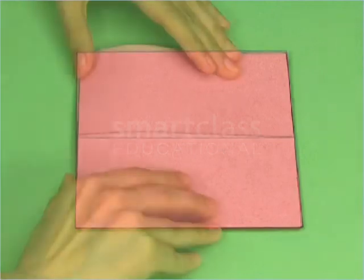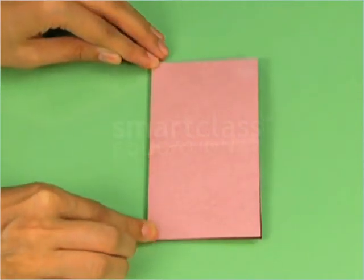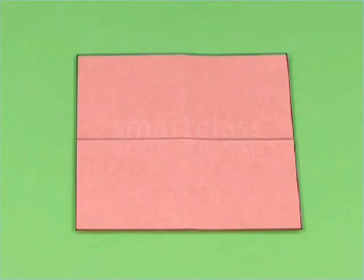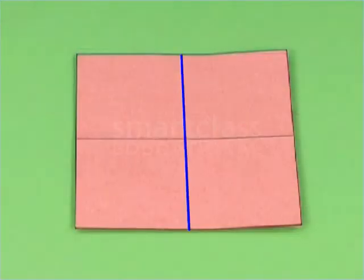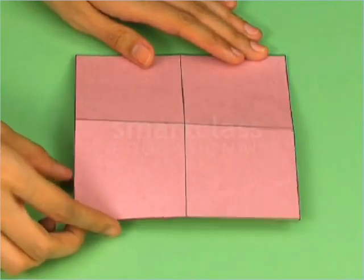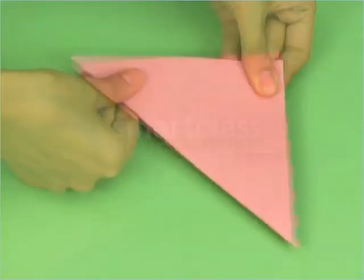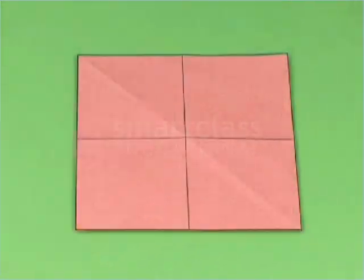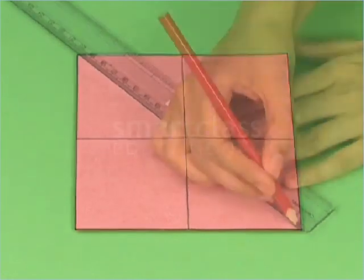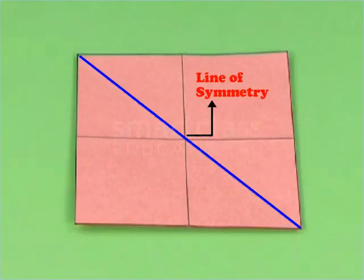Next, fold the square so that the remaining pair of its opposite sides exactly overlap each other. Unfold the square to get a crease and draw a line on the crease. This is the second line of symmetry of the square. Now fold the square along one diagonal so that its two parts exactly overlap each other. Unfold the square to get a crease and draw a line on the crease. This line is the third line of symmetry of the square.